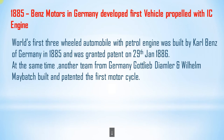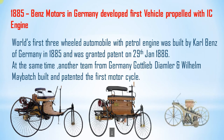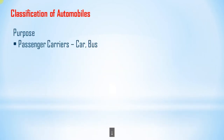The first three-wheeled coach was operated by a steam engine. The world's first three-wheeled automobile with a petrol engine was built by Carl Benz of Germany in 1885 and was granted a patent on 29th January 1886. At the same time, another team from Germany built the patent for the first motorcycle. This covers the overall history of the automobile.